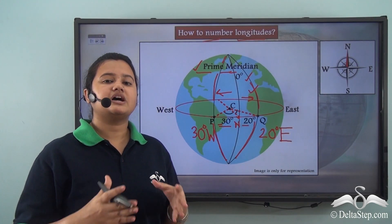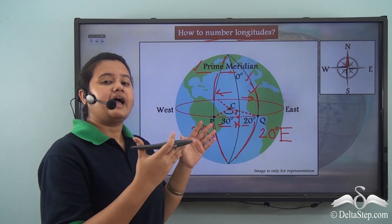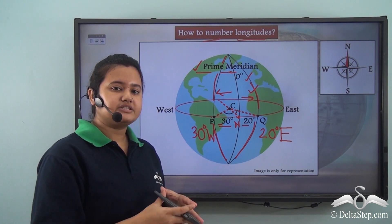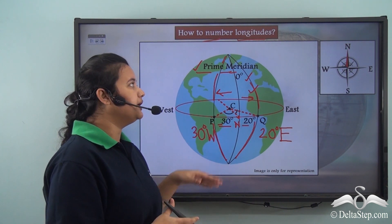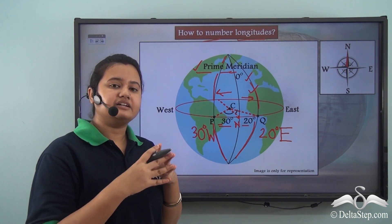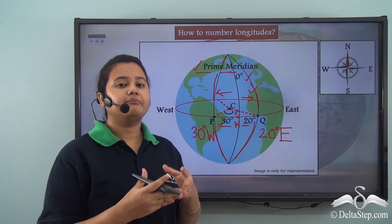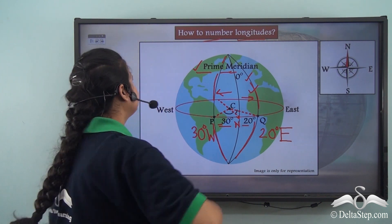The longitudes are numbered according to the angular distance from the prime meridian and the direction in context to the prime meridian.